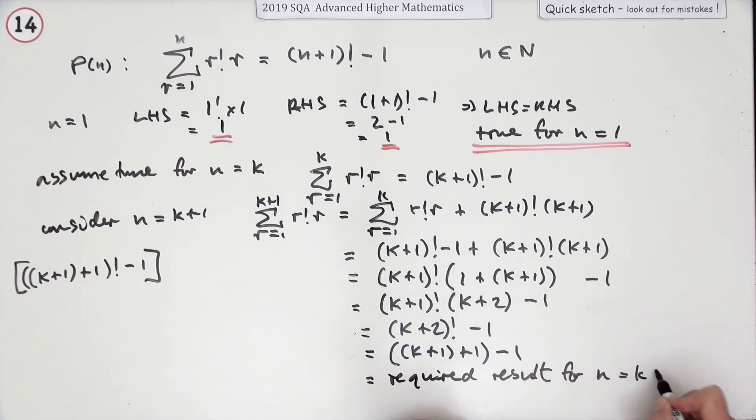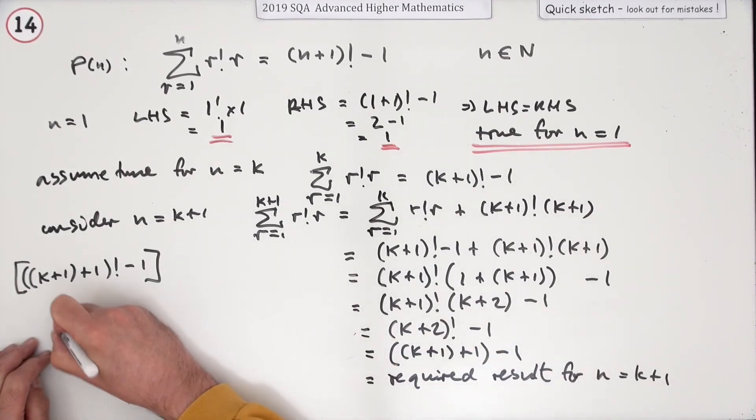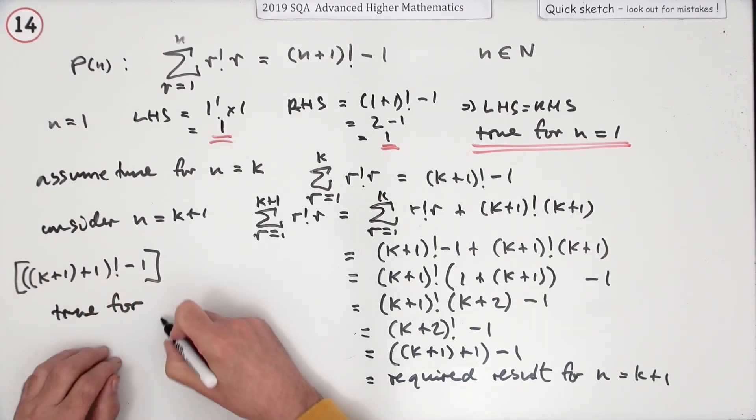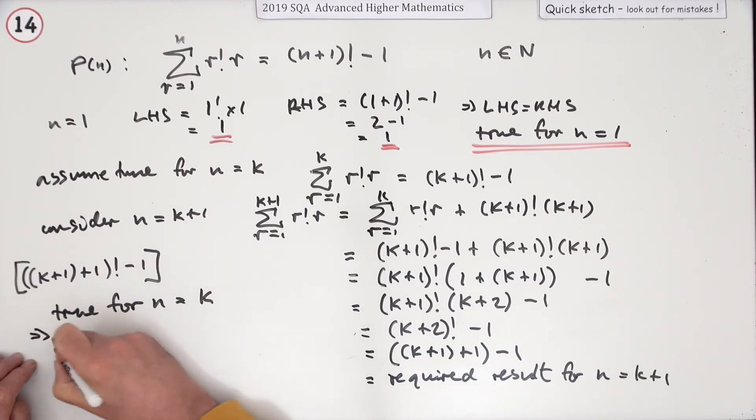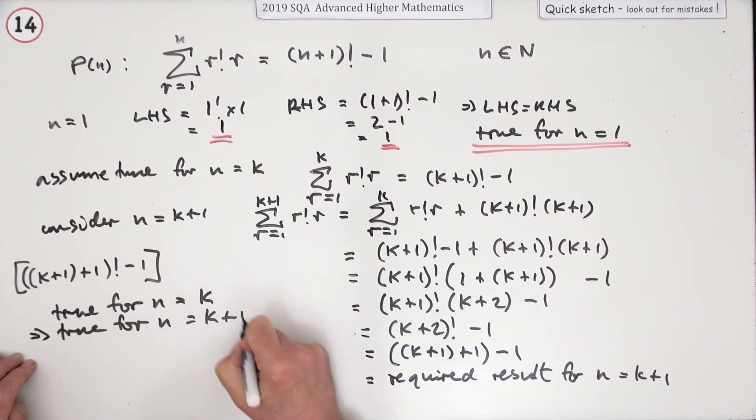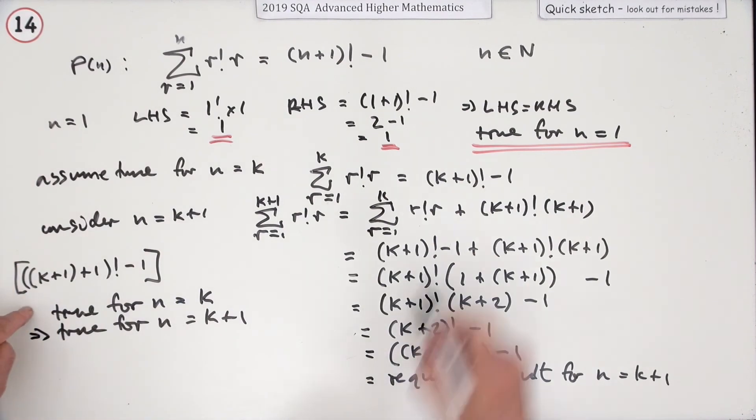Now I just have to make all the statements. But what did that do? Well, if that was the required result, that means this was the case. This meant that if true for n equals k, then it was true for n equals k+1. That was the whole point of this. If P was true when n equals k, this said then P is certainly true for n equals k+1.